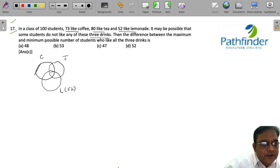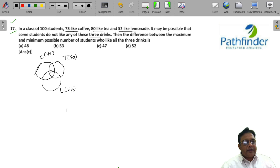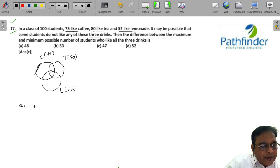We are told this number is 52, this number is 80, and this number is 73. Now, let us say people who do not like to drink anything, because we are not told how many students do not like any of these three drinks. Let us say people who do not like any of the three drinks are A.